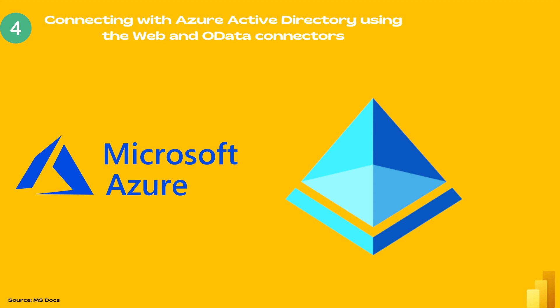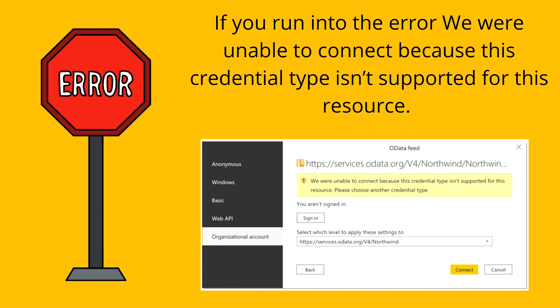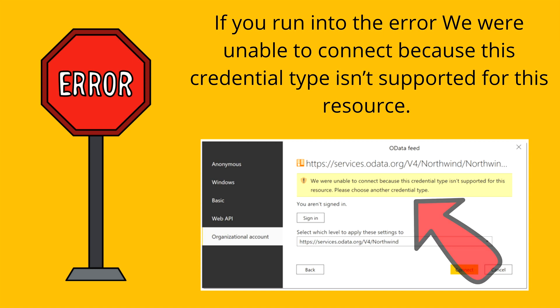Now, suppose when you are trying to connect you get an error. If you see the error 'We were unable to connect because the credential type isn't supported for this data source, please choose another credential,' this means your service doesn't support that authentication type. To resolve this, try changing to anonymous, Windows, or basic — other alternative methods that are available. Once you use one of those, you should be able to connect with your data source.